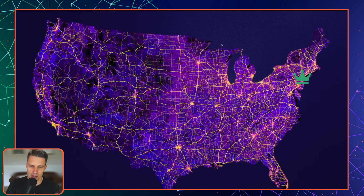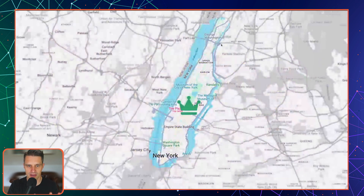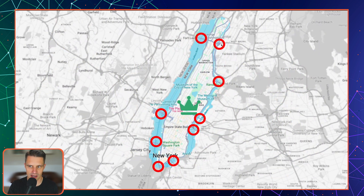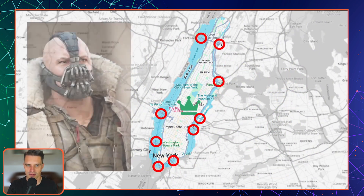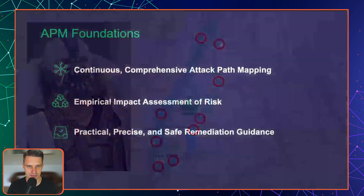If we go back to our analogy: if we're trying to defend the island of Manhattan in New York, why are we looking at the full national map? Why aren't we just looking at Manhattan? Why are we concerned about any road outside of the bridges into Manhattan? If we can just identify those bridges and shut them down, isolate the island of Manhattan, we've effectively removed the threat of anybody getting into Manhattan.